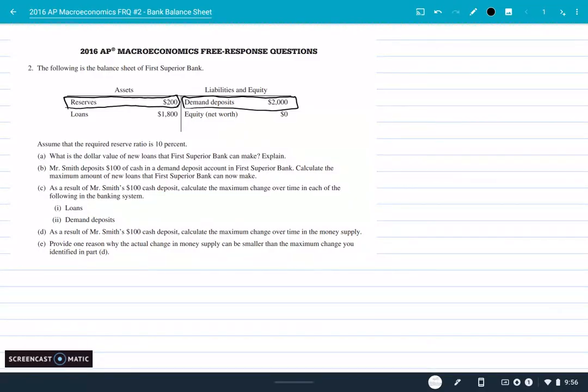The reserve requirement is ten percent. So before I even dive into the problem, I immediately know that this bank is required to have ten percent of this two thousand, and they have ten percent of that two thousand. Two hundred is ten percent of two thousand. Part A: what is the dollar value of new loans that First Superior Bank can make?